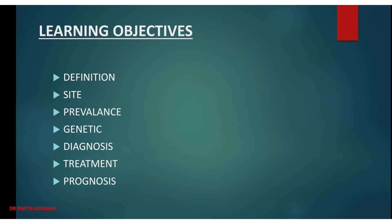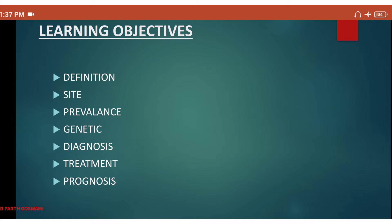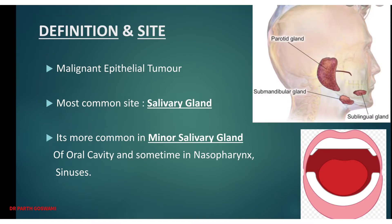Our learning objectives for today's discussion on adenoid cystic carcinoma are: to understand its definition, the common sites for development, prevalence, genetics of the disease, how to diagnose it, and the treatment and prognostic aspects.